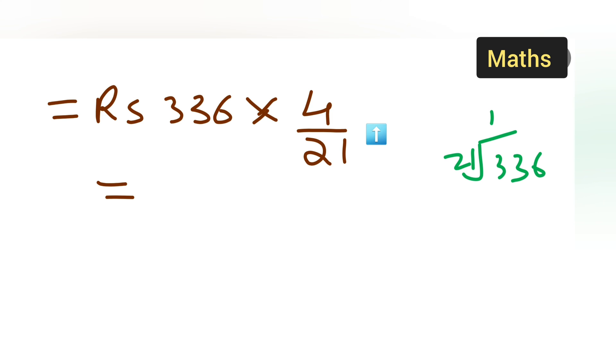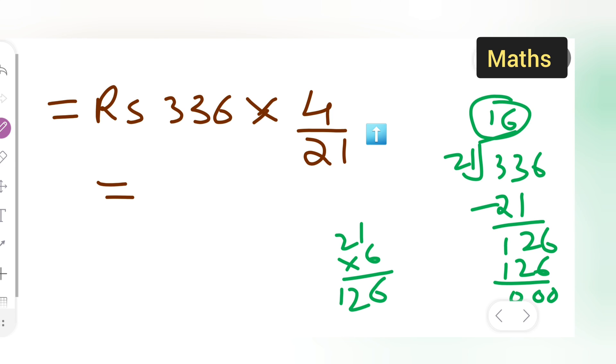Ones are 21, so subtract this. 3 minus 1 will give you 2 and 3 minus 2 will give you 1. Bring this 6 down. Then 21 sixes are what? 21 multiplied by 6, 6 ones are 6, so 6 are 126. Then what will be your answer? 16. So I can cancel this.